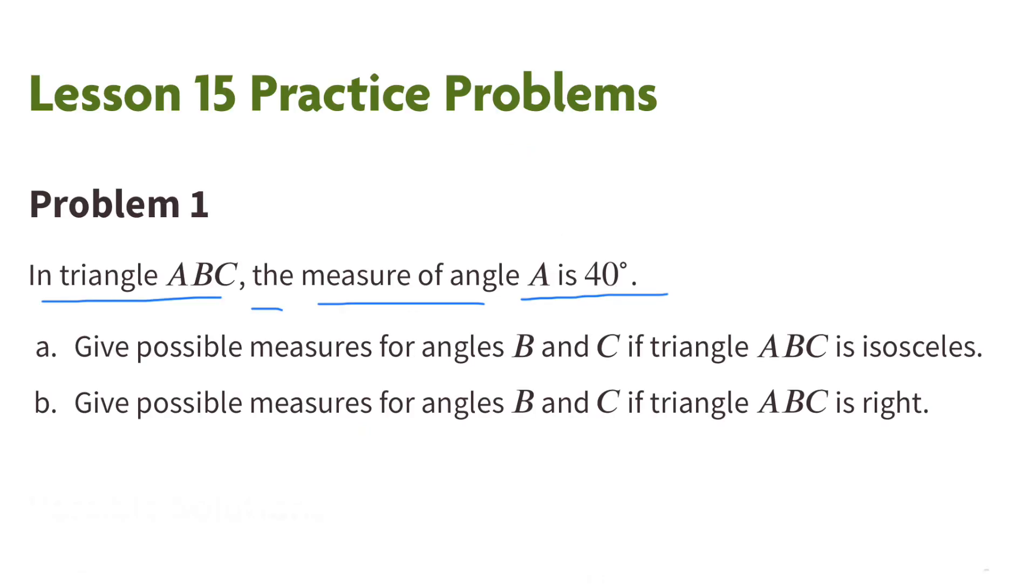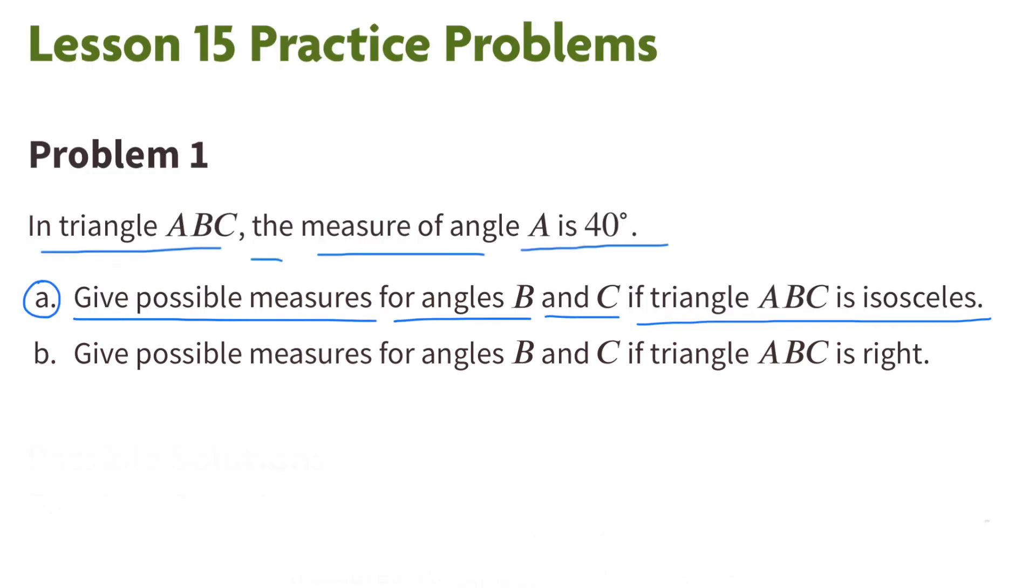Number 1. In triangle ABC, the measure of angle A is 40 degrees. A. Give possible measures for angles B and C if triangle ABC is isosceles.